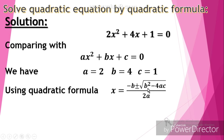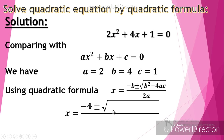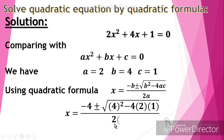Substituting the values, x is equal to minus 4 — because b is 4 — plus or minus the square root of 4 squared minus 4 times 2 times 1, all divided by 2 times 2.